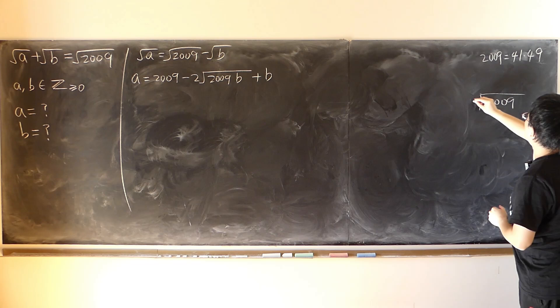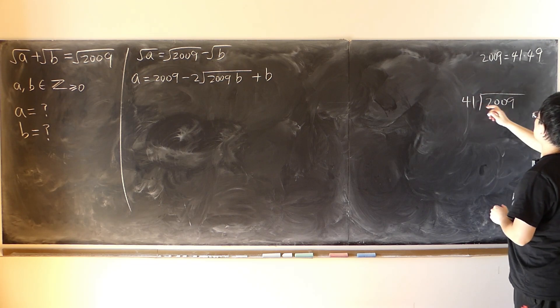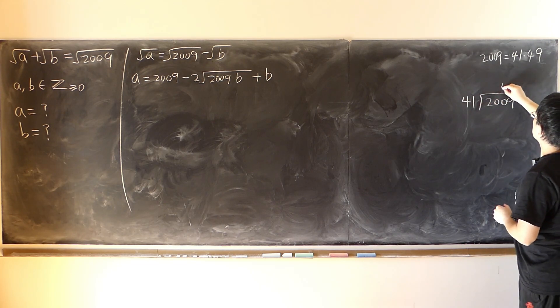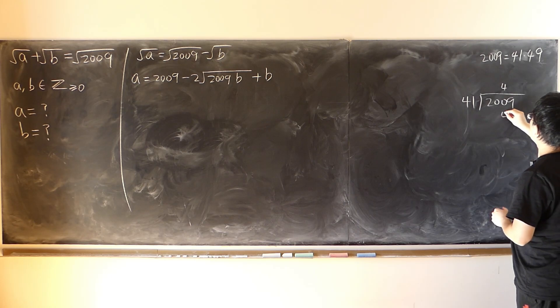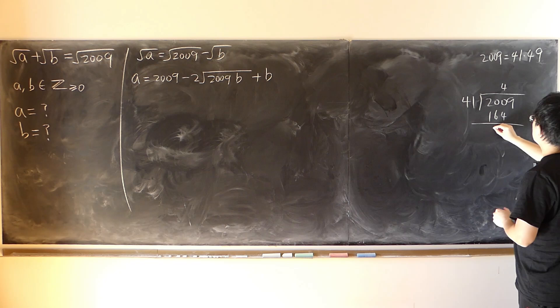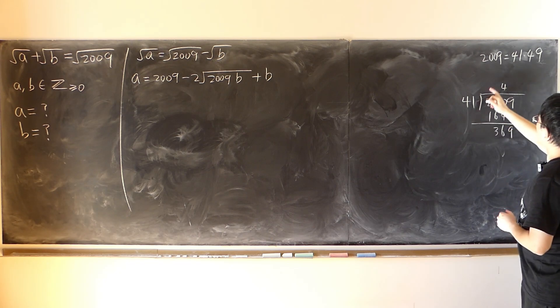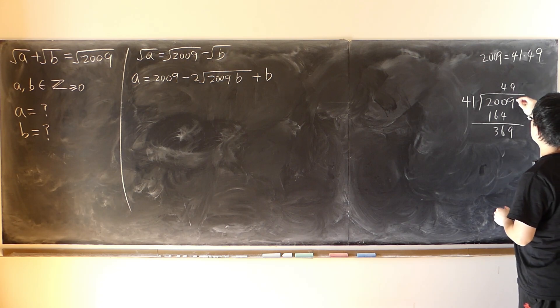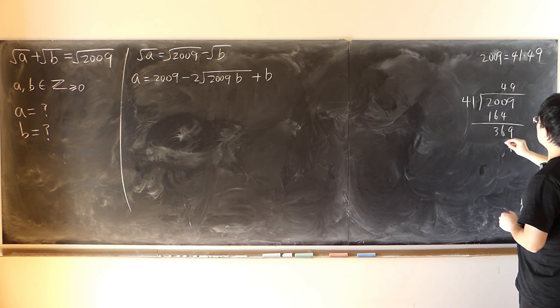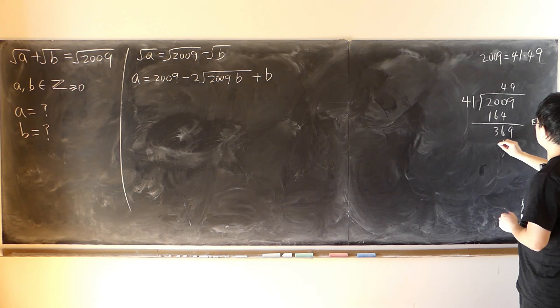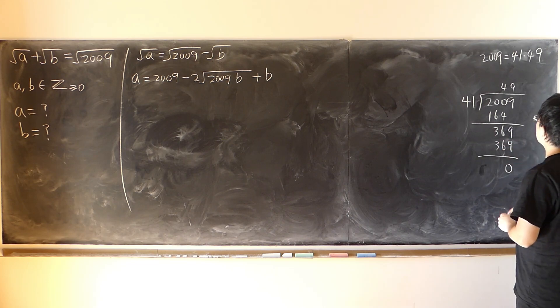2009 divided by 41 equals 49. 4 times that, 4, 1, 6, 6, 3, 9, 9 times that one, 9, 36. Yes.